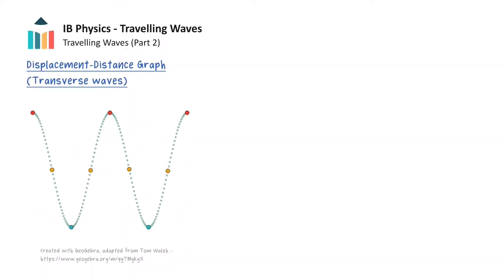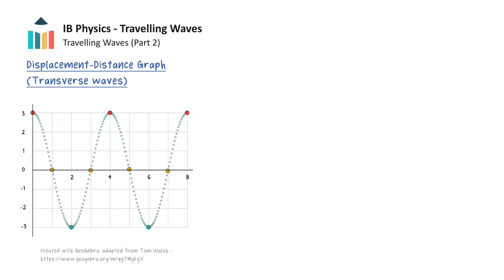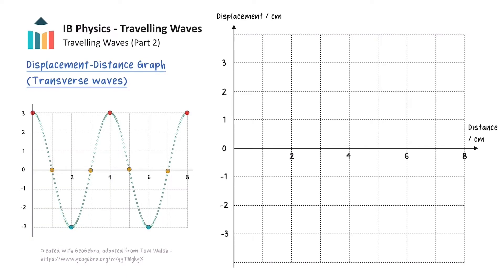In a displacement against distance graph, we will hold the time constant. We can think of this like taking a snapshot of the wave, and then we can look at how different parts of the medium are displaced from their equilibrium positions at this one instant of time. On our graph, the x-axis will be the distance along the medium starting from the left side of the diagram. The y-axis will be the displacement, where we have set the upwards direction to be a positive displacement. From this snapshot, we can see that the three red points located at distances of 0, 4, and 8cm all have the maximum positive displacement at this time, so we can go ahead and plot those points on our graph.